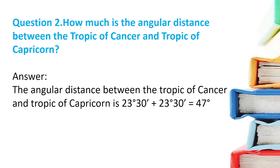Question 2: What is the angular distance between the Tropic of Cancer and the Tropic of Capricorn? The answer is 23 degrees 30 minutes plus 23 degrees 30 minutes, which equals 47 degrees.